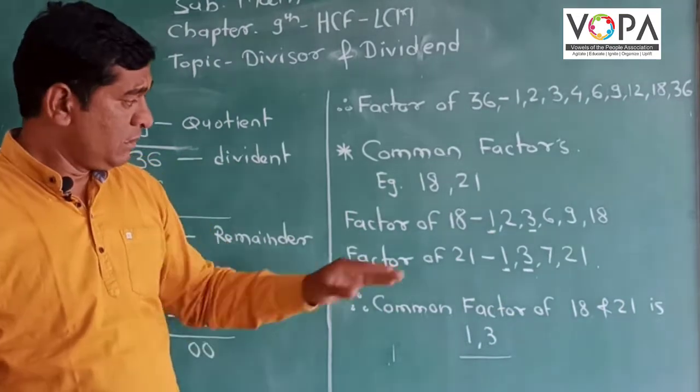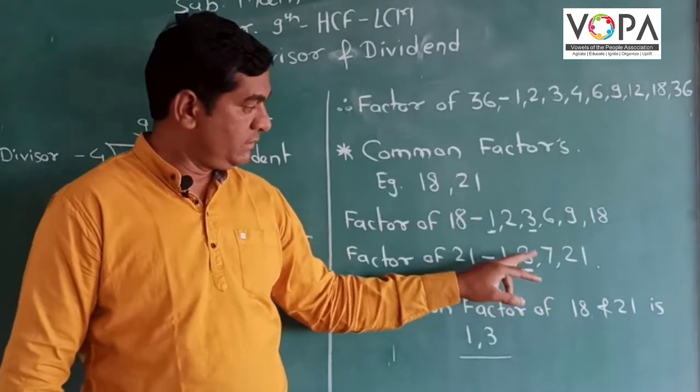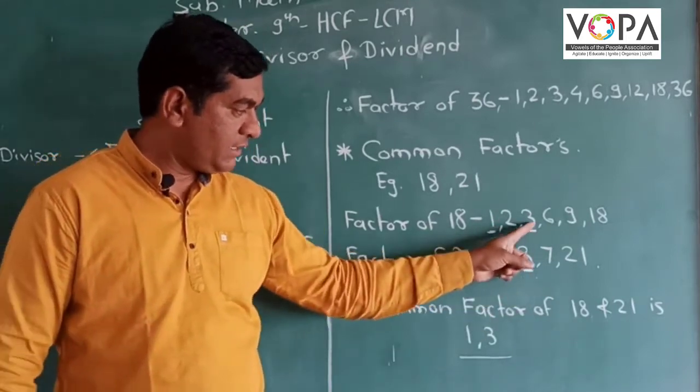Now for the common factors. From the factors of 18 and factors of 21, which numbers are common? 1 and 3.